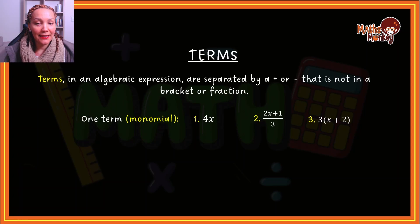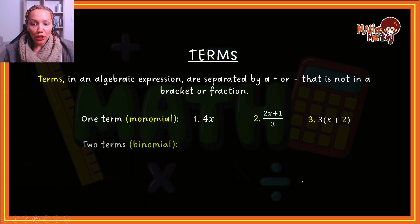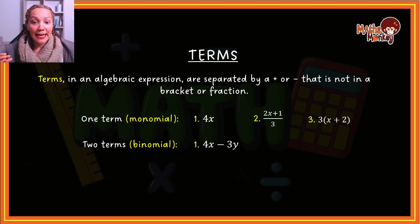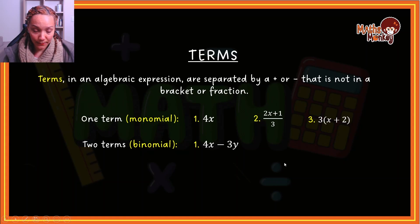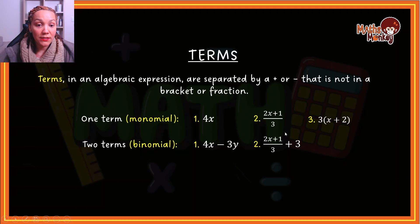It actually makes it easier to understand when there are two terms — bear with me if you're not quite with me yet. Two terms is also called a binomial. So if I look at a binomial, it has two terms. Do you see that I have a minus that is not in a fraction and not in a bracket? That minus is separating terms, so that's why this expression has two terms: 4x and negative 3y. There's another example that is also a binomial, where a fraction acts as one term and another expression acts as another term, separated by a plus.